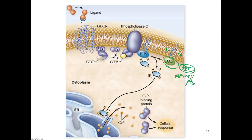Protein kinase C is a master phosphorylator that can produce a phosphorylation cascade. That phosphorylation cascade can result in a cellular response, which can also involve changes in the transcriptional profile of a cell by turning on transcription factors that regulate genes inside the nucleus. So diacylglycerol interacting with protein kinase C can cause cellular responses.